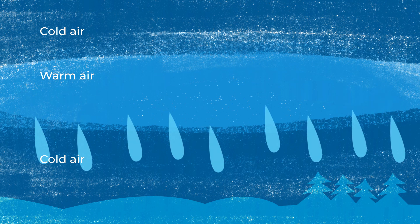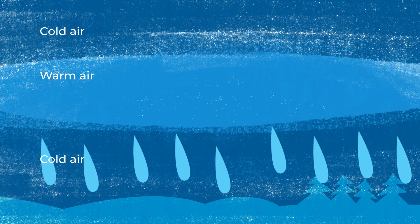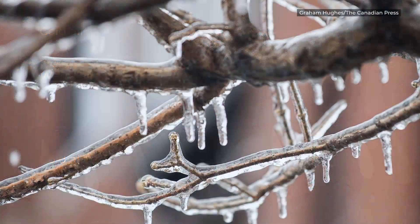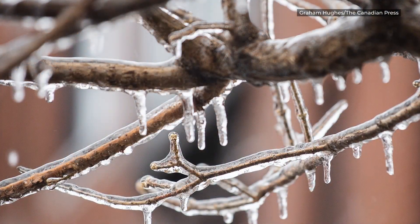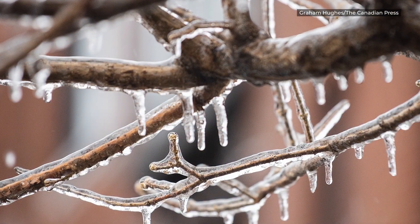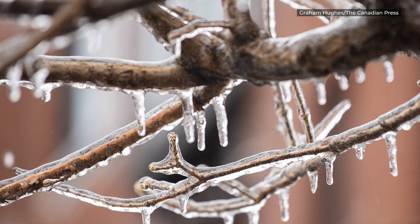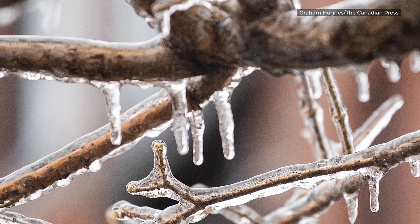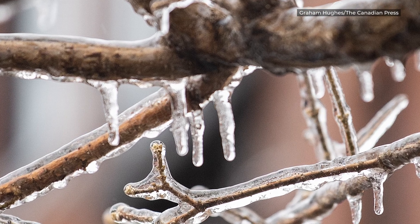Either way, that rain is supercooled when it falls into the freezing air below. When the rain hits the cold ground, or other surfaces like trees or power lines — BAM! — it immediately turns to ice.